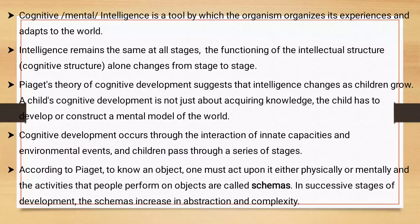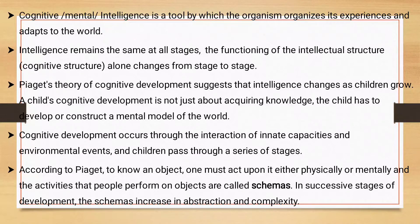Intelligence does not remain the same. Though the level of intelligence may stay constant, its structure and functioning — that is, the cognitive structure — changes from stage to stage. You will not have the same cognitive level of intelligence as when you were in a lower class. This theory gives you an idea about how children acquire knowledge and mold their knowledge according to their growth. Cognitive development is an interaction of your inner capacity and the environmental things around you.